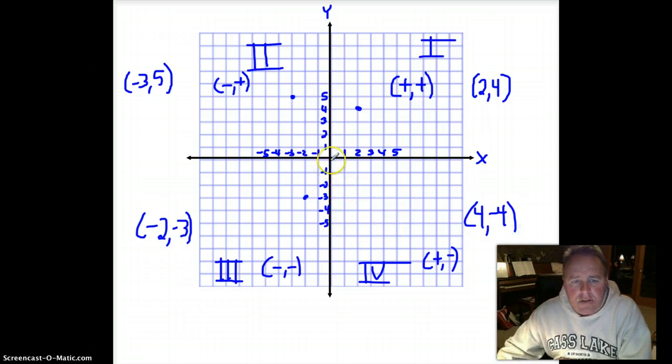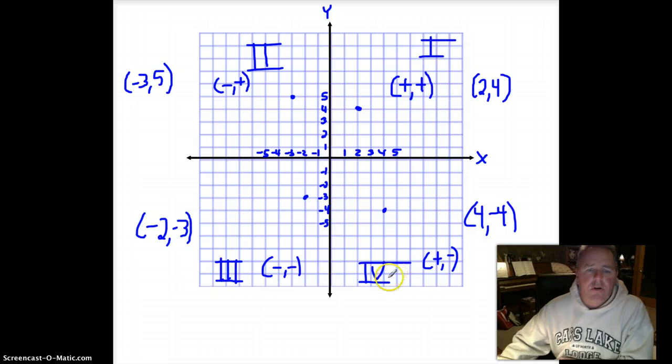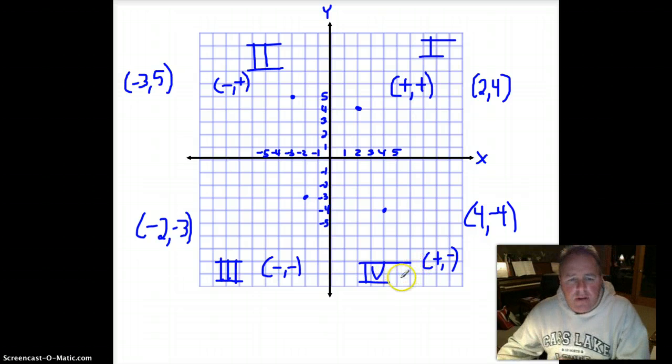Okay, so four along my x-axis, down my y-axis to a negative four, and there is my graphing point for that. So ordered pairs in our fourth quadrant is a positive negative.